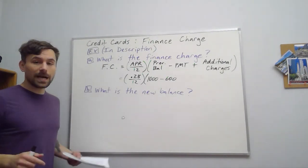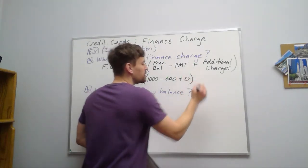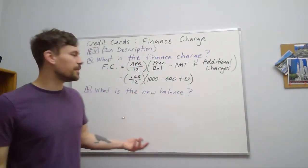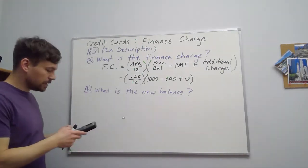but we didn't make any additional charges. So we can say plus 0, or you can just leave that out. That's fine. So that would be our setup, and then we can just calculate that.